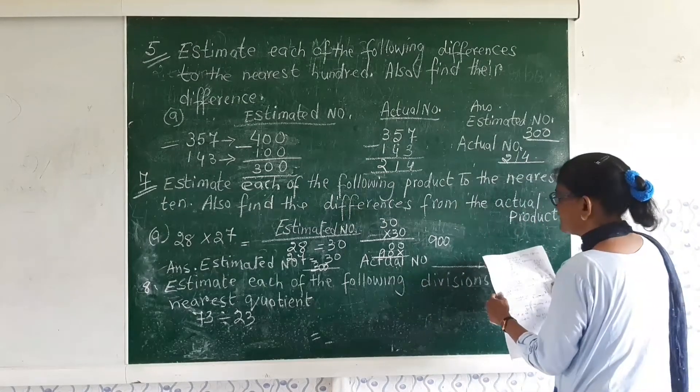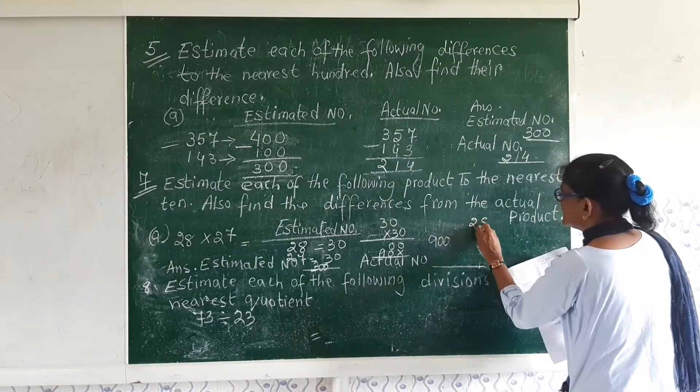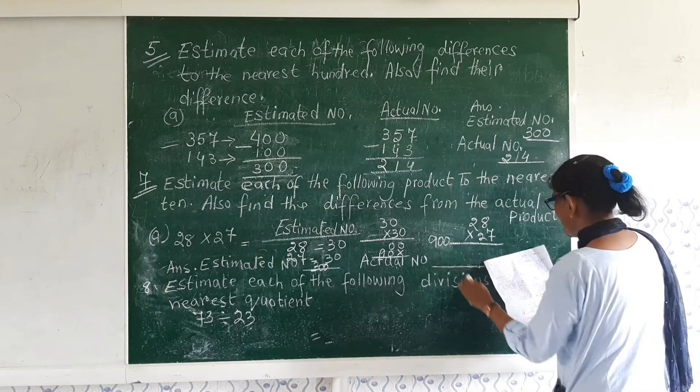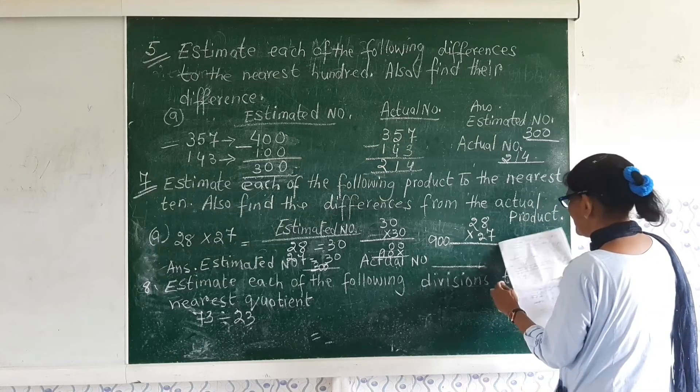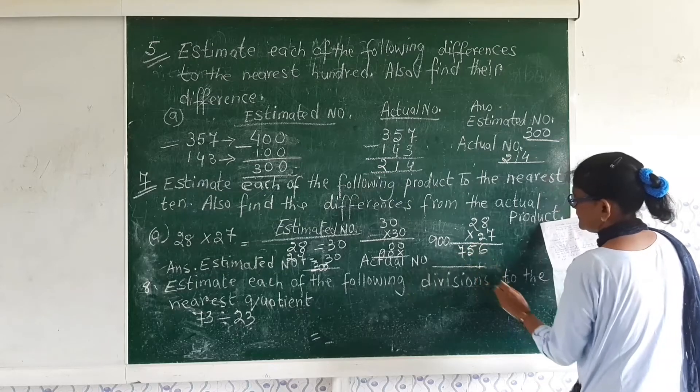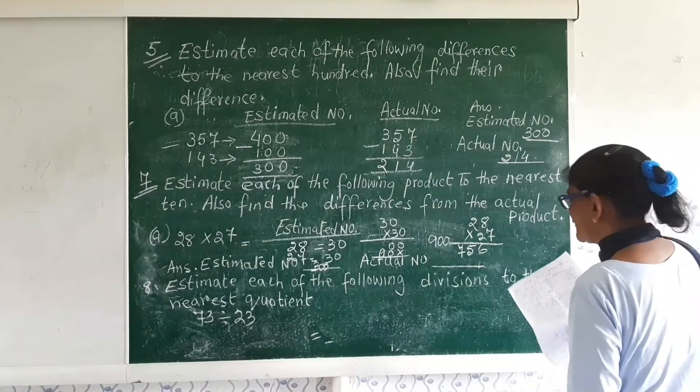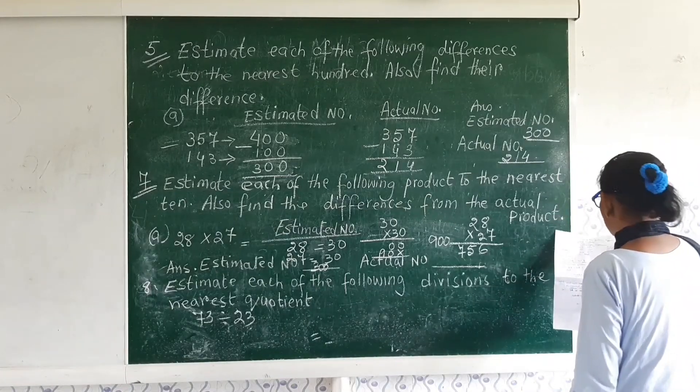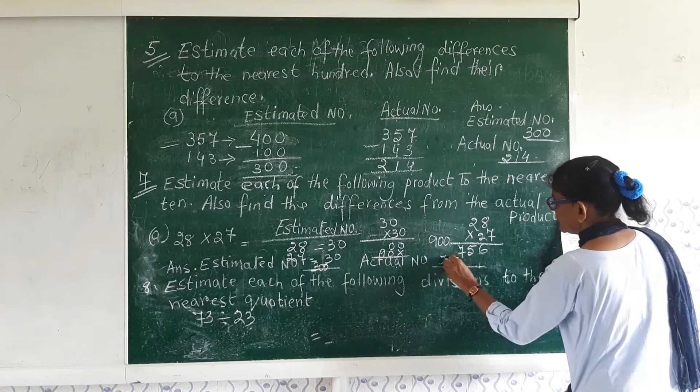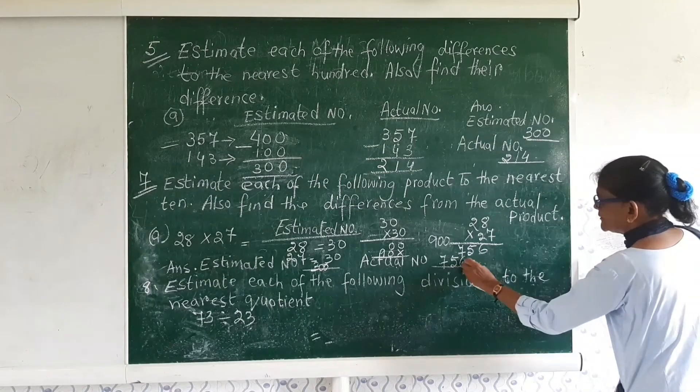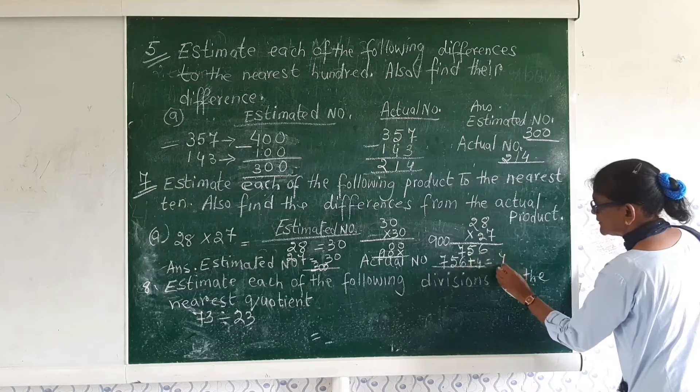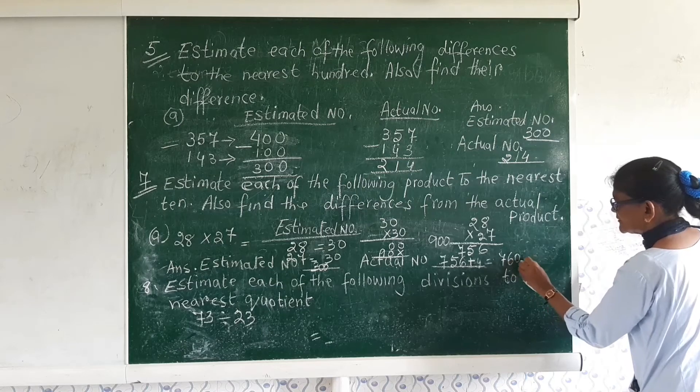And here the actual number is, we have to multiply 28 multiplied by 27. So now we multiply to get 756. This is your result. And now the actual number is 756. So we have to count the difference, which is 144.